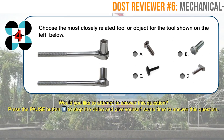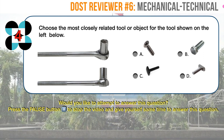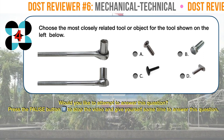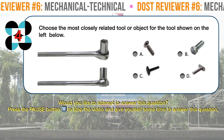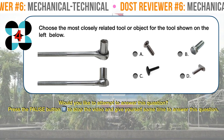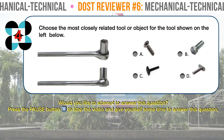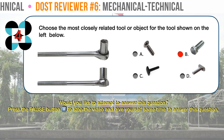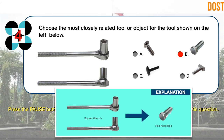Question number four. Choose the most closely related tool or object for the tool shown on the left below. The correct answer is B: a hex head bolt. The picture shown is that of a socket wrench. From the choices given, a hex head bolt which is tightened and loosened by a socket wrench is most related to the given tool.